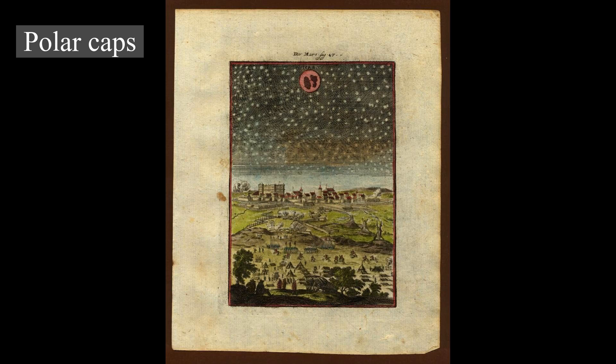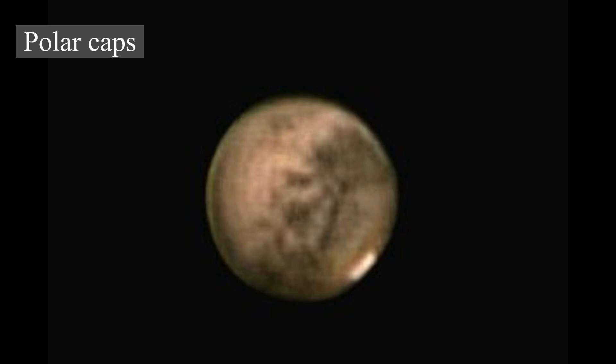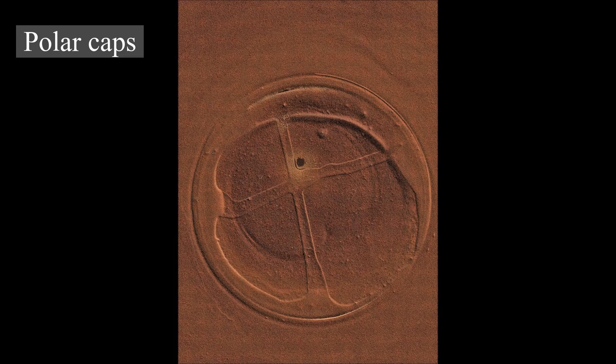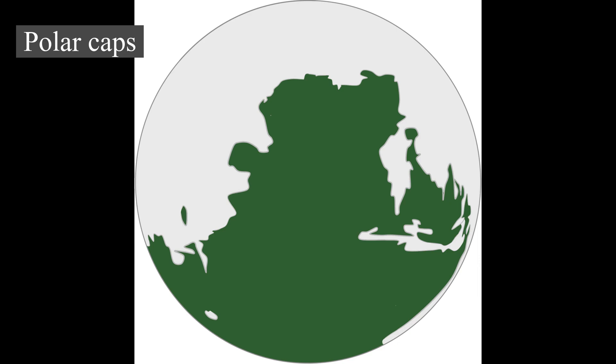Both polar caps show spiral troughs, which analysis of radar data has shown are a result of katabatic winds that spiral due to the Coriolis effect. The seasonal frosting of areas near the southern ice cap results in the formation of transparent one-meter-thick slabs of dry ice above the ground. With the arrival of spring, sunlight warms the subsurface and pressure from subliming CO₂ builds up under a slab, elevating and ultimately rupturing it. This leads to geyser-like eruptions of CO₂ gas mixed with dark basaltic sand or dust, carving a spiderweb-like pattern of radial channels under the ice.